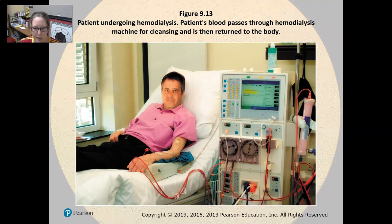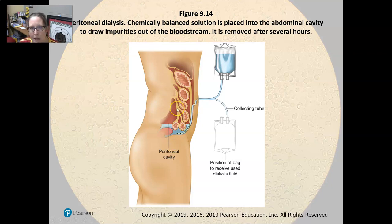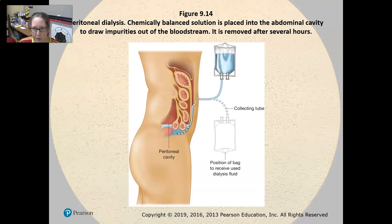This is what hemodialysis looks like, with blood going out and blood going in, but the machine is what cleans the blood — the machine is doing the job of the kidneys. Peritoneal dialysis uses a solution flushed through the peritoneal cavity that contains the kidneys and intestines, pulling the waste out. The impurities are flushed and collected with the dialysate fluid using two bags, making it an alternative to hemodialysis.